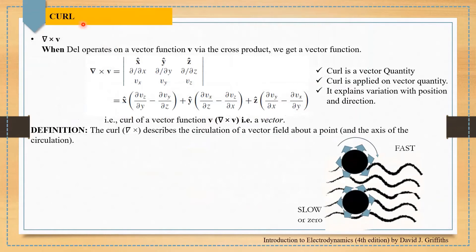Now let's look at the basics of curl. Mathematically, del cross v is the curl of vector v. When we operate the del operator on vector function v with the cross product, we get a vector function. Del cross v can be written in determinant form where the first row consists of x-cap, y-cap, z-cap; the second row consists of the components of del; and the third row consists of the components of vector v.